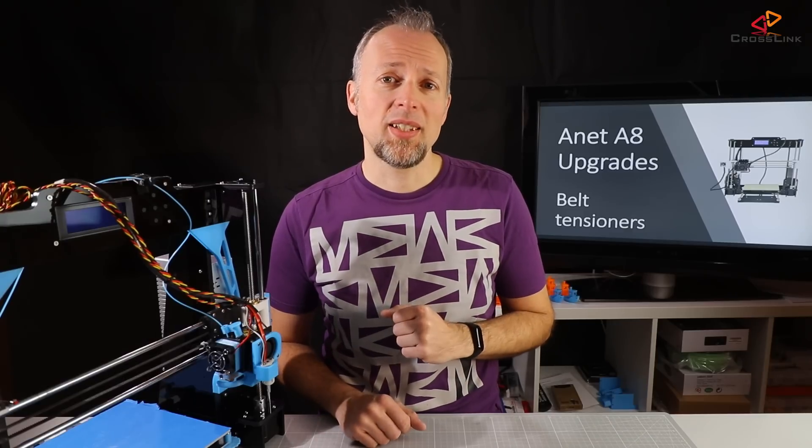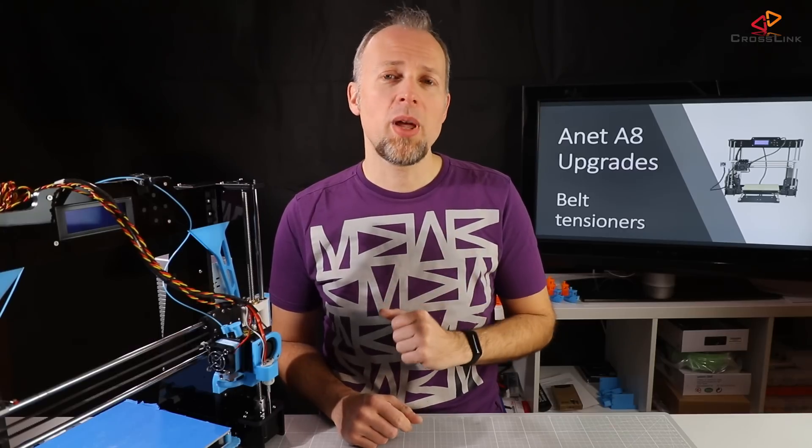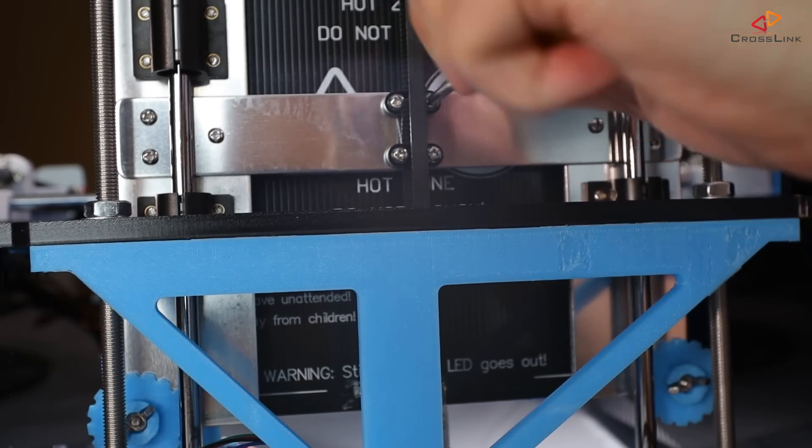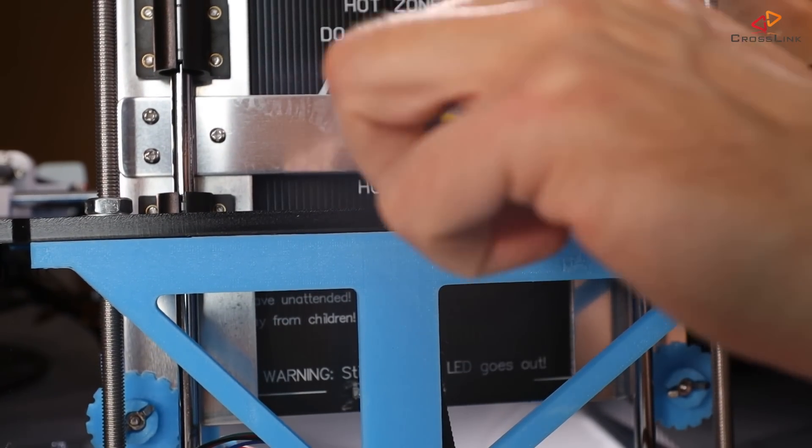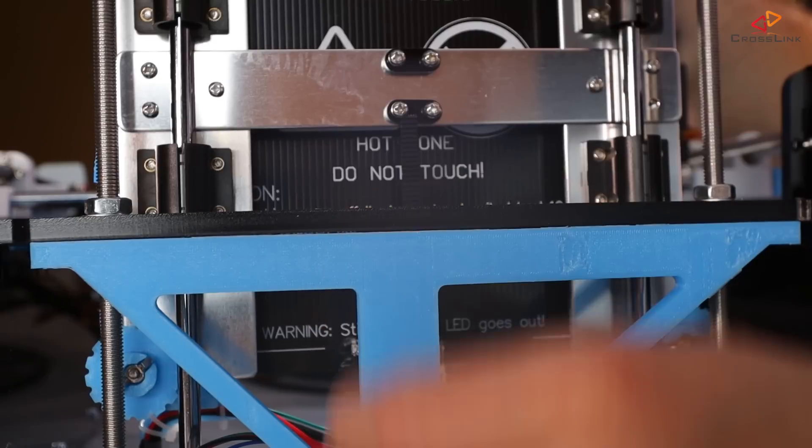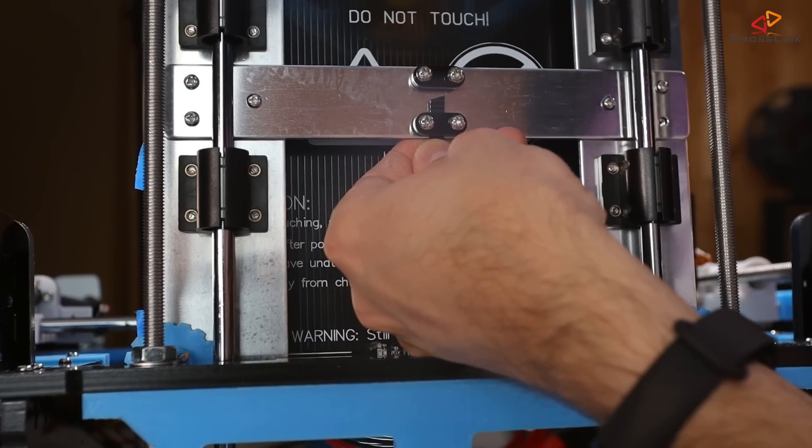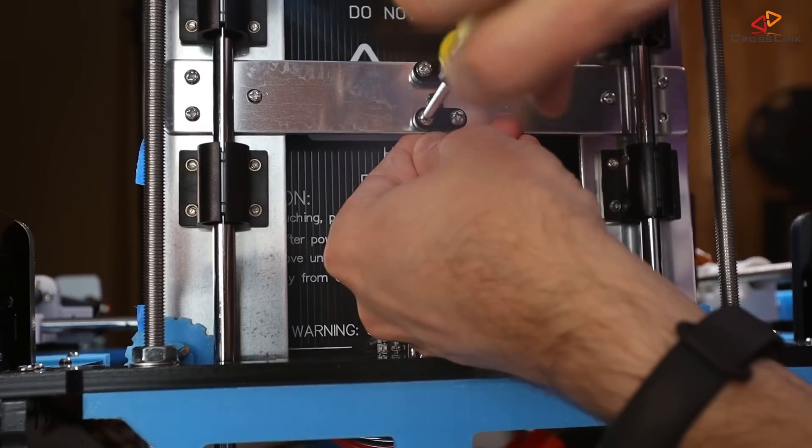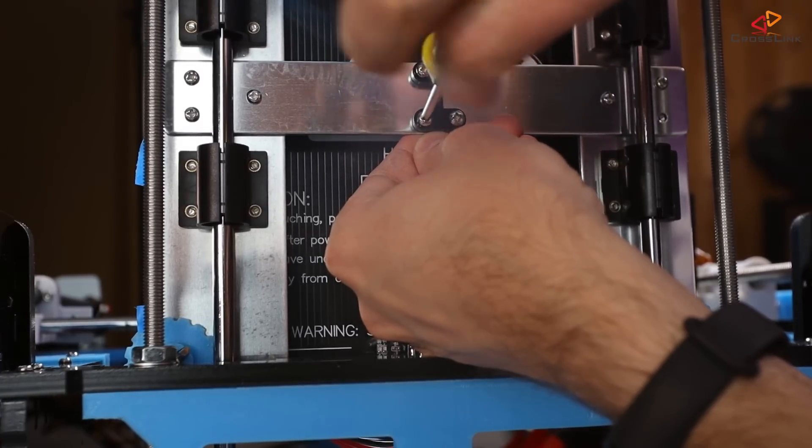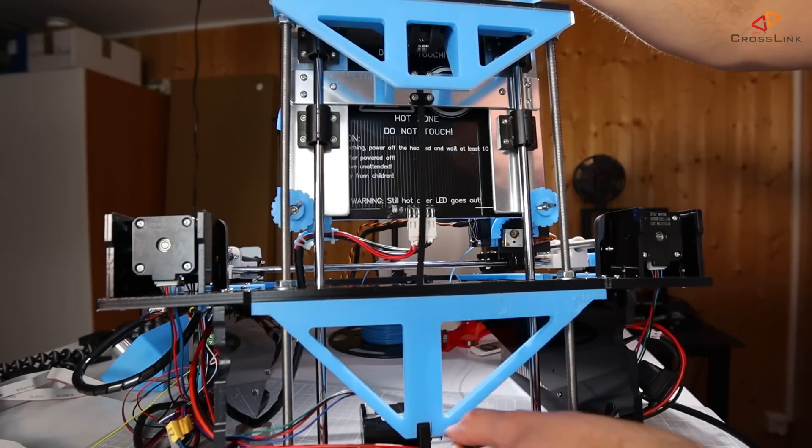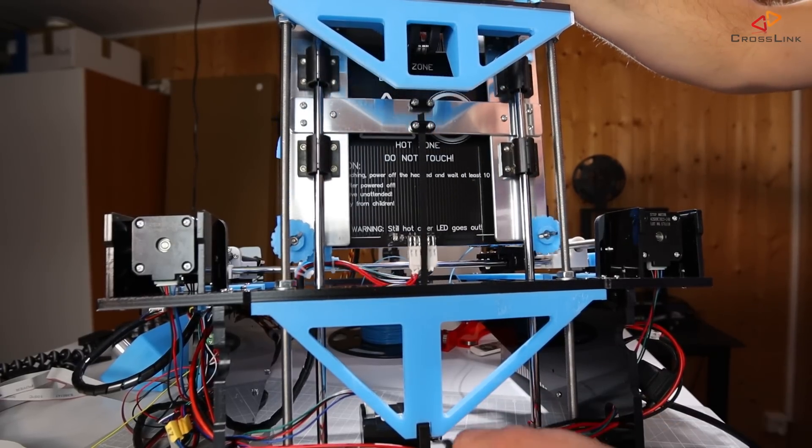Now let's take care of the Y-axis. Lay the printer on its backside so you can reach the belt attachment easier and release all four screws to take the old belt out. Fix the new belt to the attachment that is facing towards the Y-axis motor. The belt teeth should be pointing towards you or better said away from the heat bed. Wrap the belt around the motor and feed it back to the front of the printer.